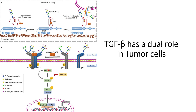Now let us understand how TGF-beta helps in intracellular signaling. The receptors to which TGF-beta can bind are TβR1 and TβR2. TGF-beta facilitates the interaction between TβR2 and TβR1, as seen in panel B, and this interaction leads to phosphorylation of both TβR2 and TβR1.